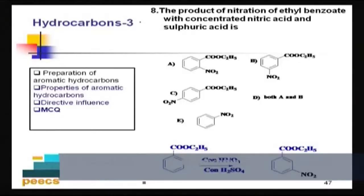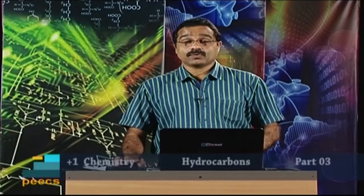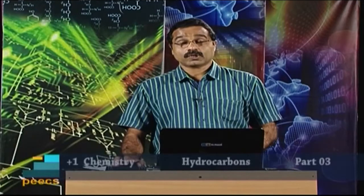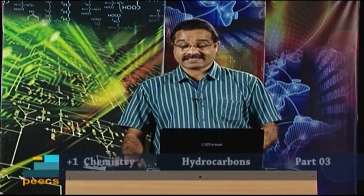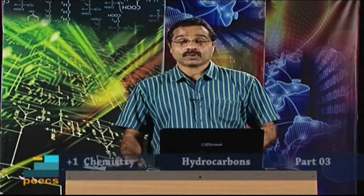Question 8: The product of nitration of ethyl benzoate with concentrated nitric acid and sulfuric acid is: A) ortho-nitro product, B) meta-nitro product, C) para-nitro product, D) both A and B, E) nitrobenzene. The ester group is meta-directing, so the product is meta-nitroethylbenzoate. Answer: B.